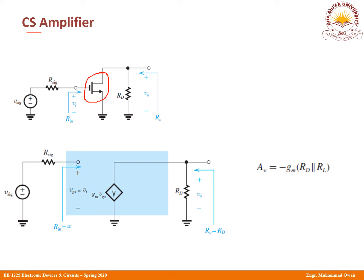Here is a very important relationship. Please try to understand what is the relationship between VI and V-signal here. V-signal is equal to VI. Why? Because there is no input resistance — it is infinite. So Vgs or VI is equal to V-signal. When VI equals V-signal, this means AV equals GV, which is the overall voltage gain. Therefore, the overall voltage gain is exactly the same as your AV.